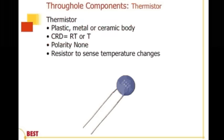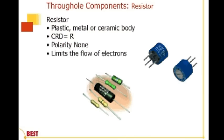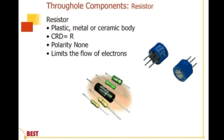Moving on to through-hole components: we have thermistors, which measure or respond to changes in temperature by changing their resistance values. Then we have different kinds of resistors. Notice the color bands on these resistors in the lower photograph, as well as the markings on the larger black component body style — those rings make a difference depending on the position and the color. In the upper right, those blue devices are variable resistors or potentiometers, which have a little dial so a wiper arm can give either full resistance value or near-zero resistance.